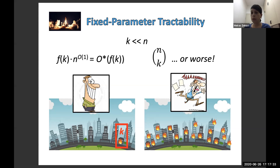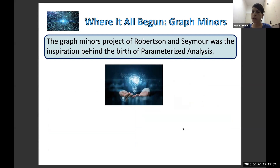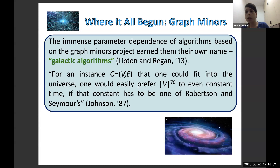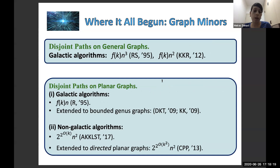The graph minors project of Robertson and Seymour was the inspiration behind the birth of parameterized analysis. However, there is a major issue in terms of efficiency: an immense parameter dependence of the algorithms based on this theory. They even got their own name — galactic algorithms. As a fun quote: if you have an instance that you can fit into the universe, you would prefer N to the 70 even to a constant derived from this project.